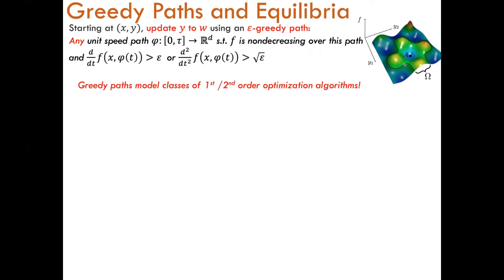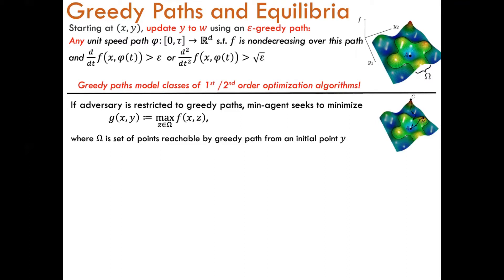Now that we have restricted the max player's choice of updates, what will the min player try to do? In the global min-max framework, the min player seeks to choose a value of x which minimizes the function max of f of x, z where the maximum is taken over all points z in R to the d. However, if the max player is computationally bounded, the min player will seek to minimize a new objective function. This new objective function g of x, y — which we refer to as the greedy max function — is the maximum value of f of x, z, where the maximum is now taken over all points z constrained to some set omega. This constraint set omega is the set of points reachable by greedy path from some initial point y.